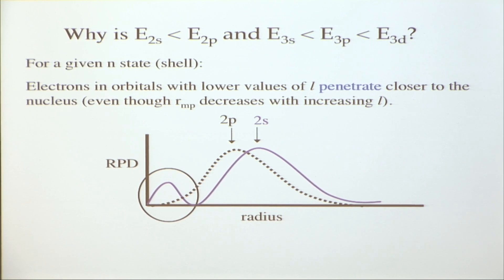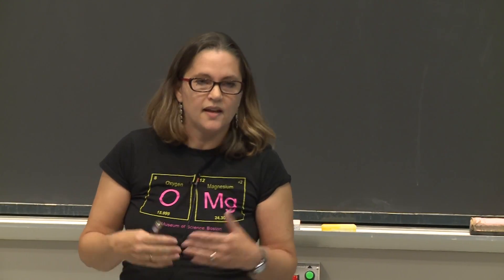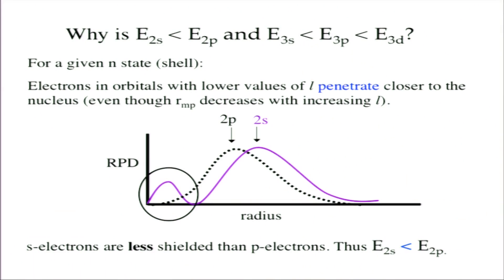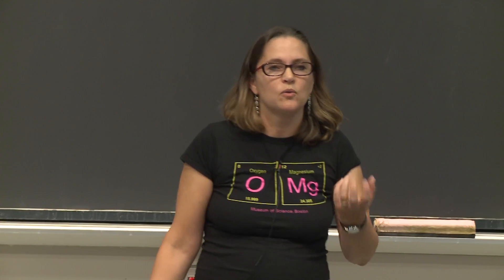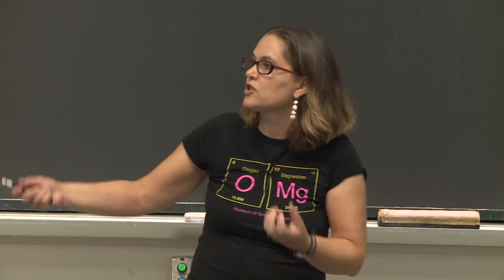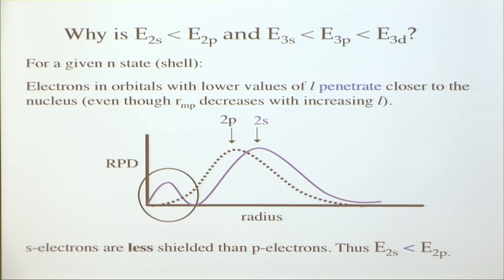Electrons in orbitals with lower values of l — like 2s versus 2p — penetrate closer to the nucleus, even though the most probable radius is larger for 2s. Despite this size difference, there's more probability of finding electrons near the nucleus with 2s. That results in lower energy: less shielding for s orbitals than p orbitals, and because their probability is that they're closer, they're bound more tightly with lower energy.